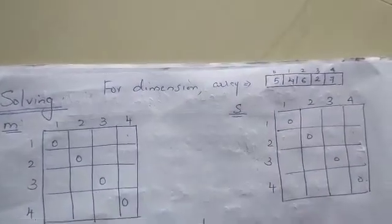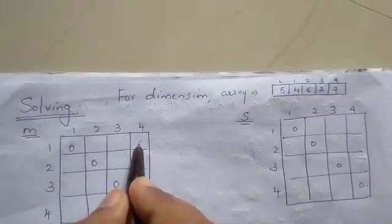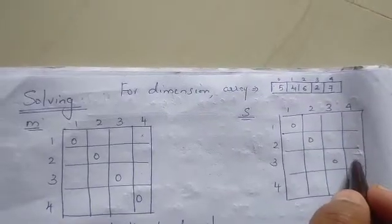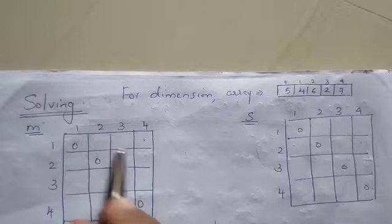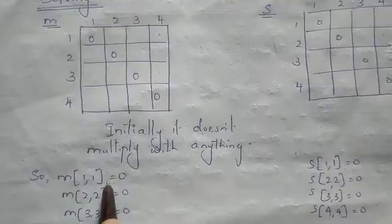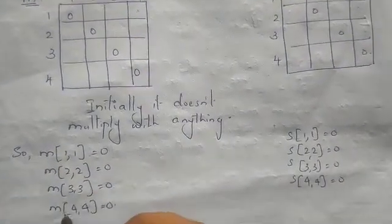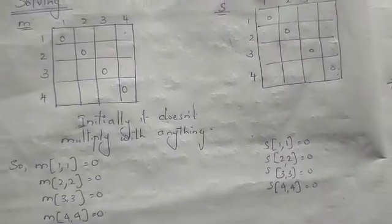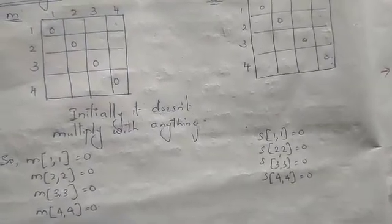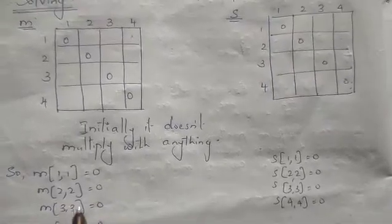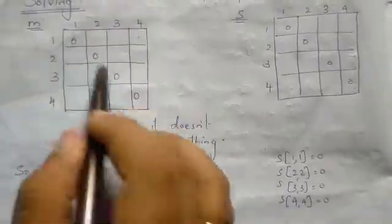I will set the diagonal to 0. So M11 is A1, M22 is A2, M33 is A3, M44 is A4 — all set to 0. Similarly S11, S22, S33, S44 are all set to 0. The M table stores the minimum cost and the S table saves the split point index.